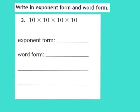Let's take a look at question number 3 together. Once again, our job is to write this in exponent form and word form. When I write my expression in exponent form, I need a base and an exponent. The base is the number used as the repeated factor, and I can see that 10 is the repeated factor. So I write down 10 as my base. The exponent tells how many times the base is used as a factor, so I make my count: 10 multiplied 1, 2, 3, 4 times. So my base is 10 and my exponent is 4, because we're multiplying that 10 four times.